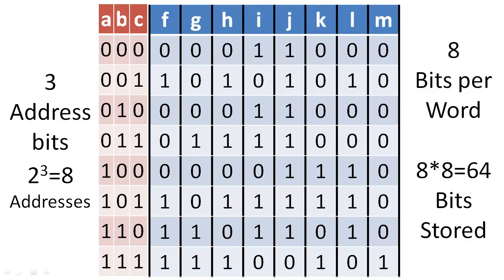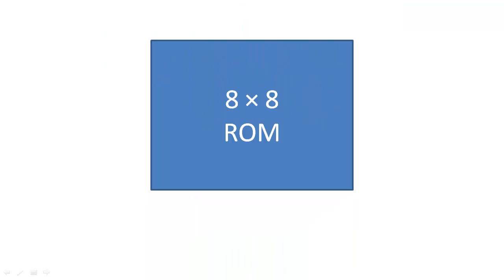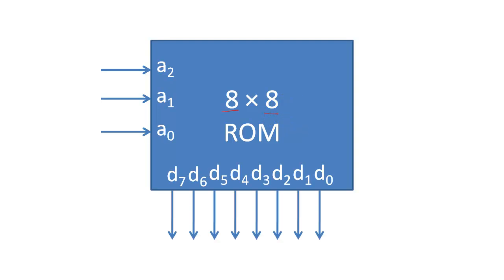When we include a storage device in a circuit, we will typically indicate the dimensions of the storage device, where the first number reflects the number of addresses, and the second number reflects the number of data bits per word.